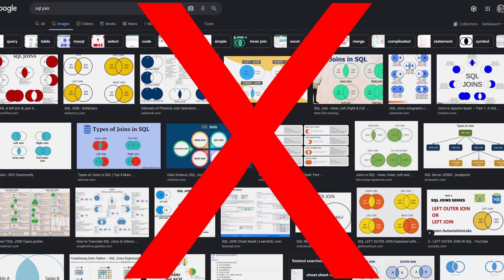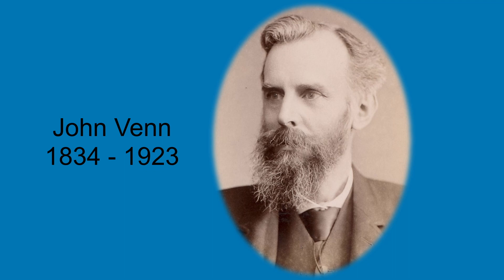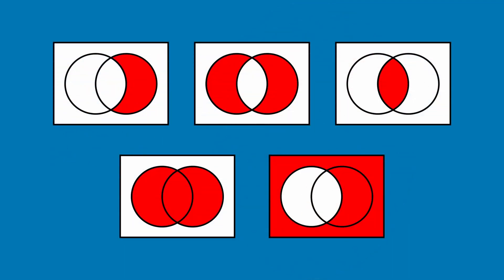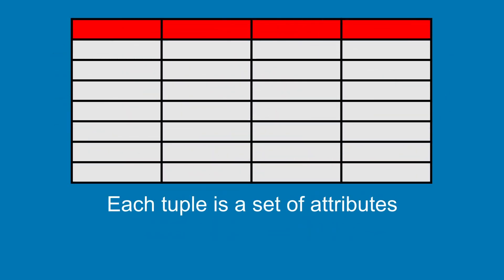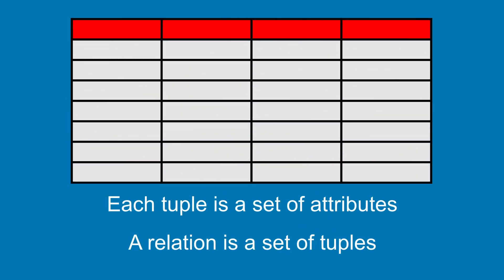But don't worry, we are here to make it right. Way back in the 1880s, John Venn came up with these diagrams as a visual aid for teaching fundamental set operations, and for that purpose they are amazing, brilliant. But a SQL join is not a general set operator — it's a relational operator, and relations are a very special kind of sets. They are sets of sets, and Venn diagrams are unsuitable for illustrating them.